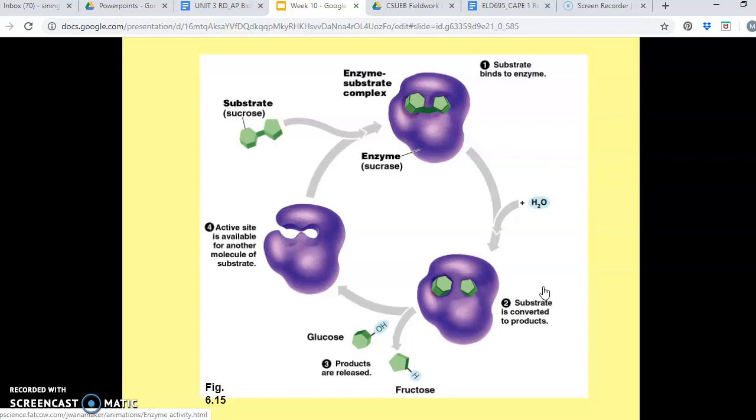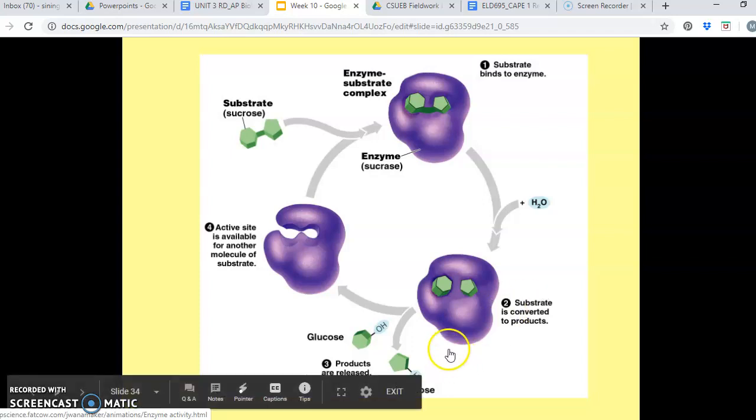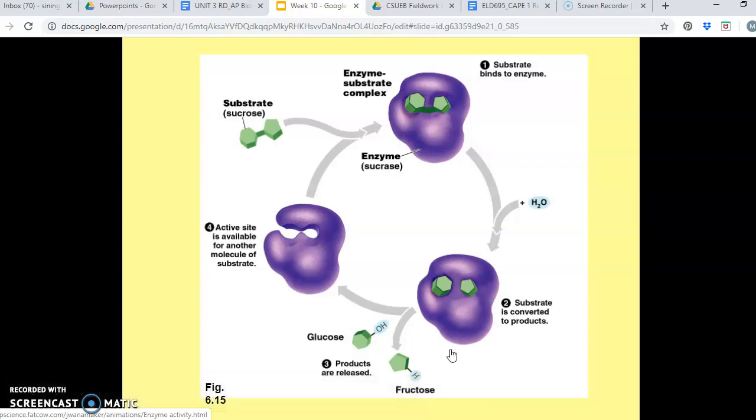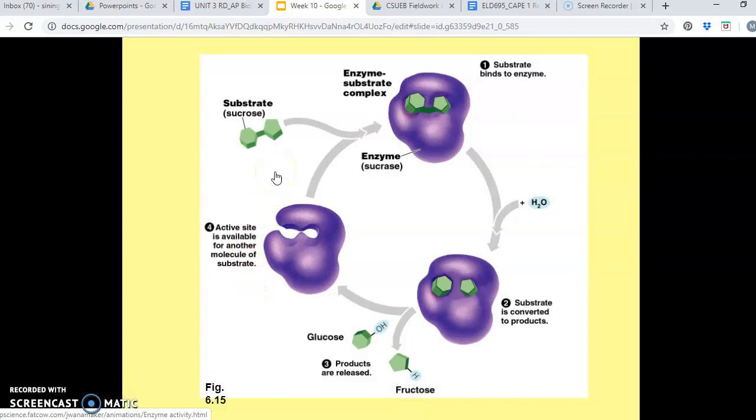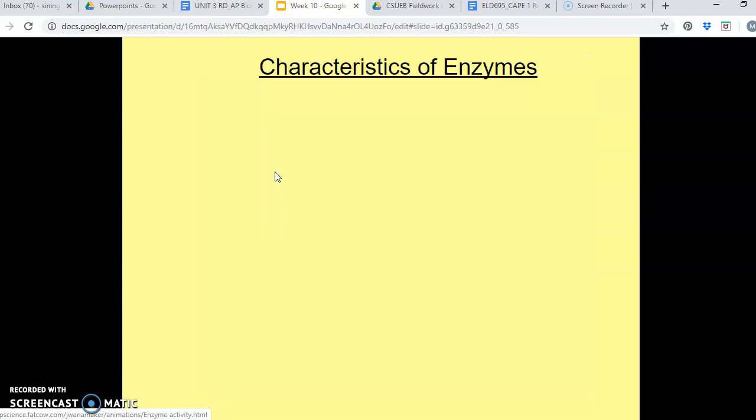And then from there, the substrates are held in the active site by all of the different weak interactions. So those can be the hydrogen bonds, the Van der Waals forces, ionic bonds, things like that. And then the active site will lower the activation energy and actually speed up the chemical reaction. And again, we'll go into more in depth about how in a little bit. And then substrates are converted into the products. And then those products are released. And then finally, the active site is available for two new substrate molecules.